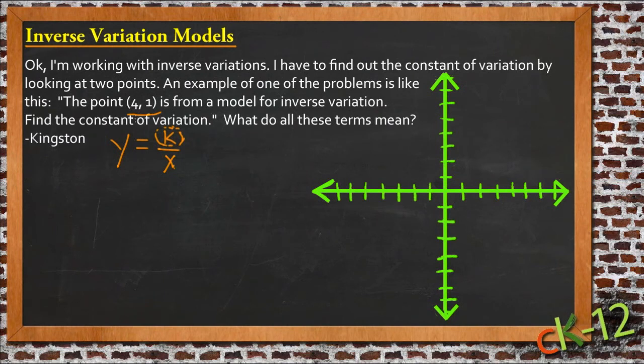So he's given a point (4, 1), which is right here or so on our graph. So we just substitute in that y and that x, and we get 1 equals k over 4. And then we just solve for k, we multiply both sides by 4, and we get 4 equals k.